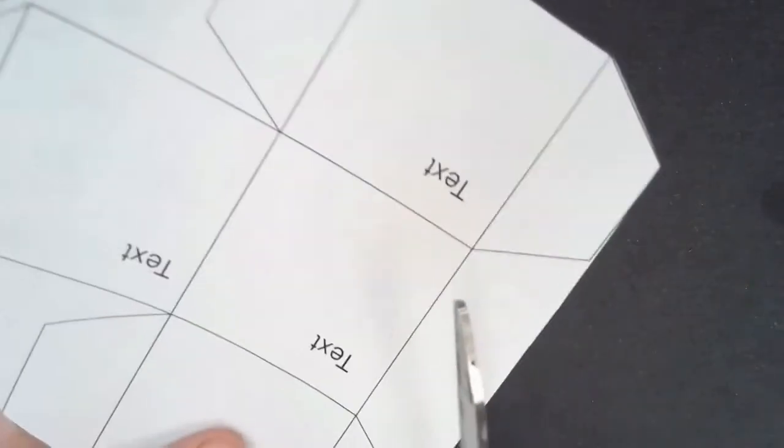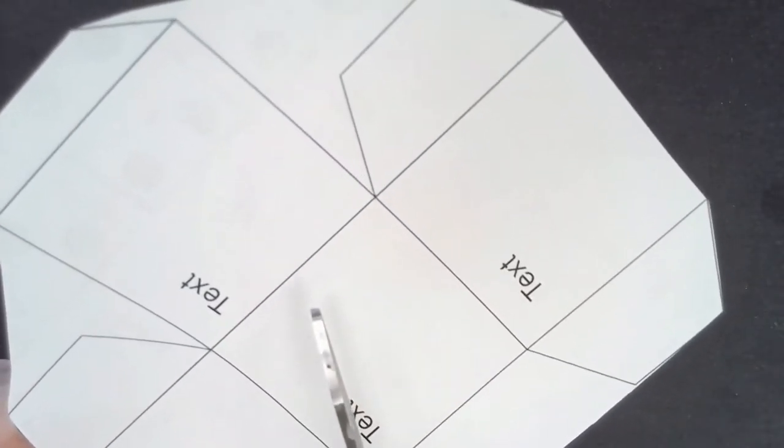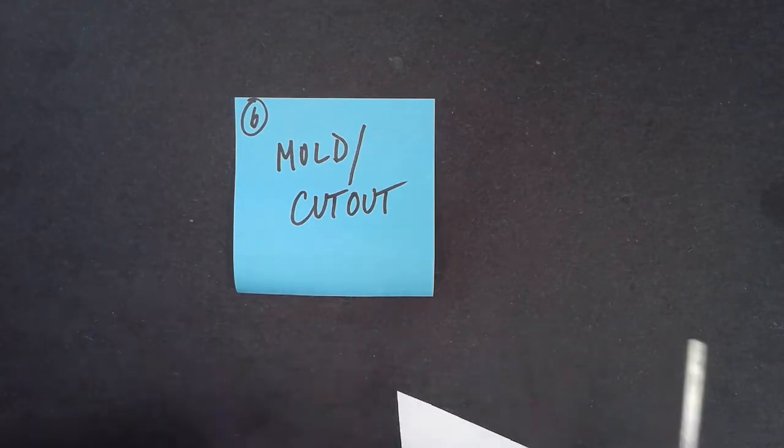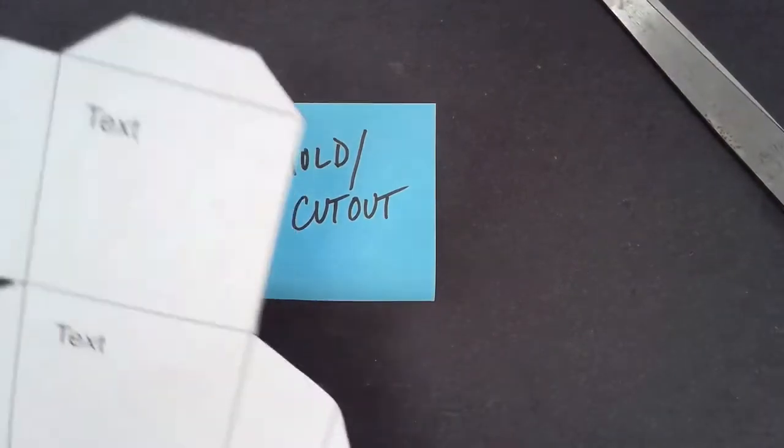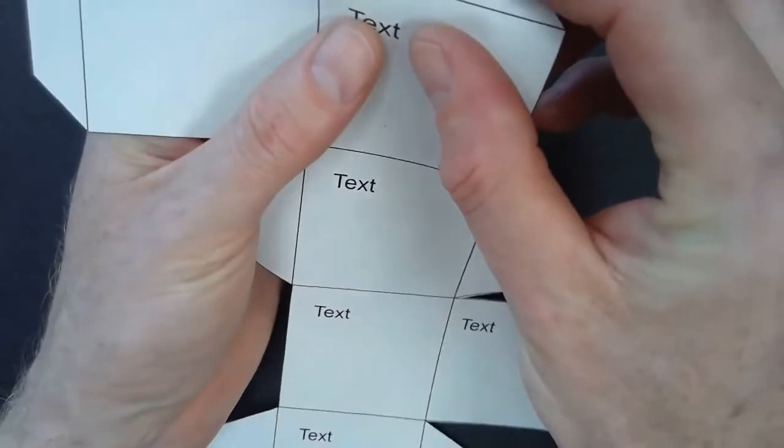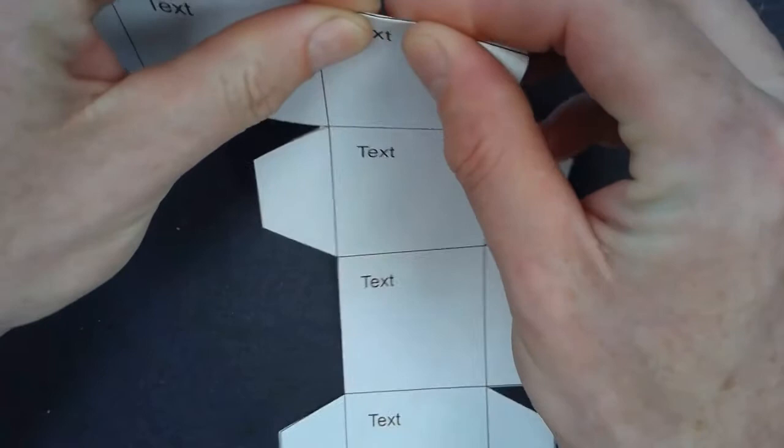So once you get the template cut out, then you will put it all together. Once a template is cut out, you will fold on anywhere there is a tab.